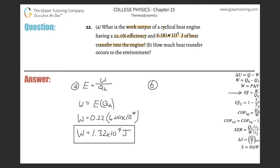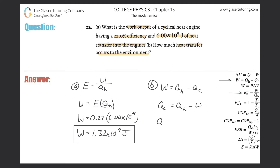Letter B: How much heat transfer occurs to the environment? For that, whenever you're dealing with a cyclical heat engine, you use this formula at the top: the work output of the engine equals the heat of the hot reservoir minus the heat put out to the cold reservoir. This is the heat put into the engine, and this is the heat released from the engine into the environment. We're solving for Q sub C, so Q sub C equals Q sub H minus the work output.